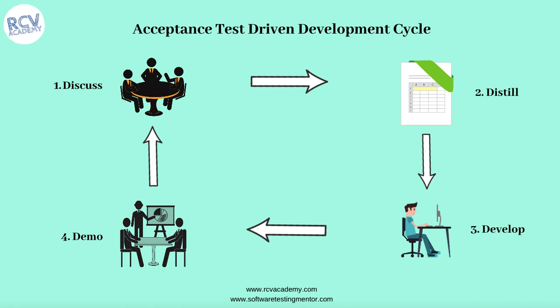Once coding is done and all acceptance test cases from step 2 are fulfilled, step 4 is Demo. Whatever has been developed is packaged, built by the developer, and deployed on a test server. The working software is then demonstrated and showcased to relevant stakeholders — business people and the whole development team — to see what has been built, whether improvements are needed, and whether it meets the criteria defined in the Discuss phase. These are the four key steps in the acceptance test driven development lifecycle.